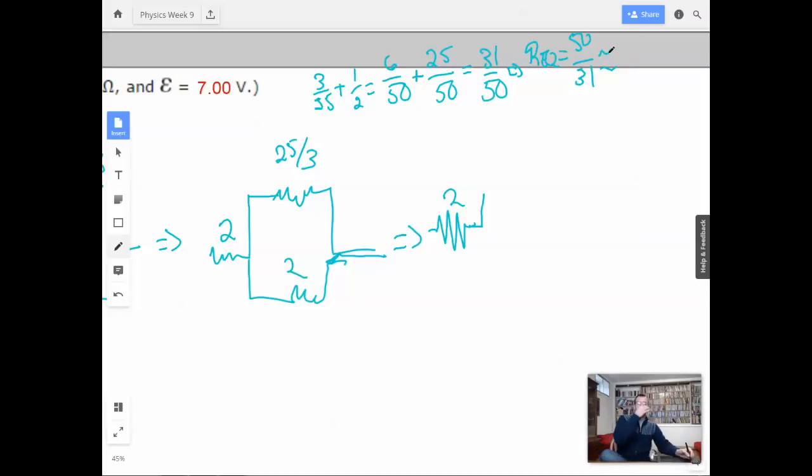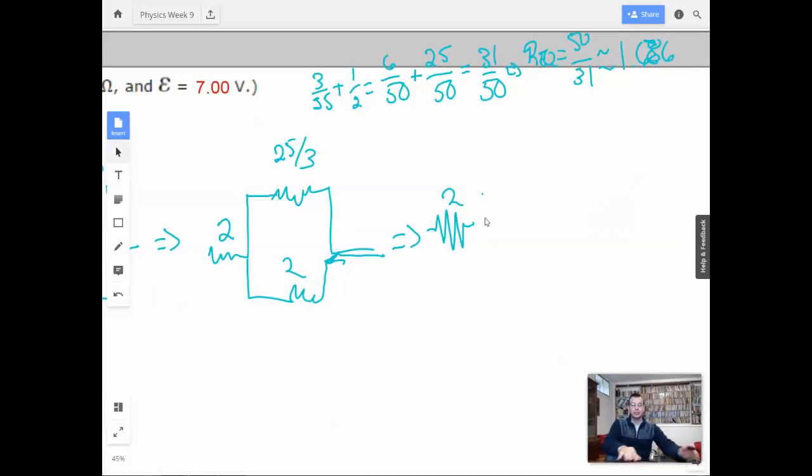All right. So then we'll have 31/50ths, which implies that the R equivalent will equal 50/31sts. So that's like what? 5 thirds? 1.6. I'm going to say 1.6. 1.66. There we go. 50/31sts.